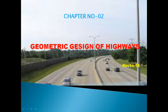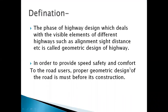We can start Unit 2, that is Geometric Design of Highways. The first point in this chapter is the definition of Geometric Design. The phase of highway design which deals with the feasible elements of different highways, such as the alignment, sight distance, etc., is called the Geometric Design of Highways.